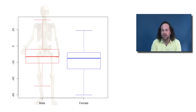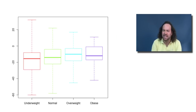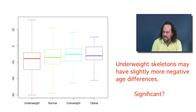Finally, there's another categorical variable with these skeletons: mass category — whether they're underweight, normal, overweight, or obese. Looking at a box plot across all four classifications, they're all fairly similar, indicating there's not a huge relationship between mass category and the difference in estimated versus actual ages, but there might be a little bit of an effect. For example, the underweight ones appear slightly more negative on the box plot, suggesting their age differences might be slightly more negative compared to the others. Whether that's a significant change is something we'll address in subsequent lectures.